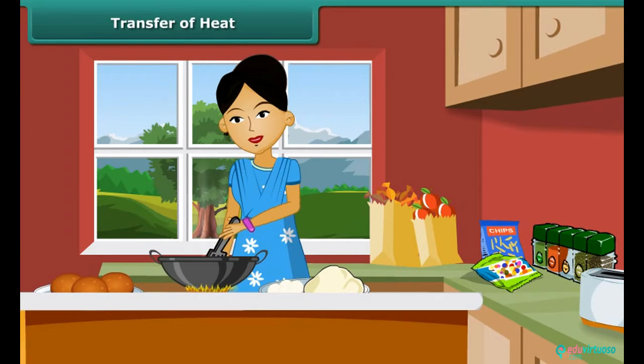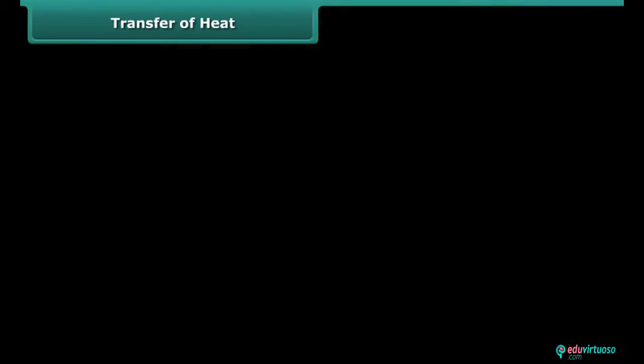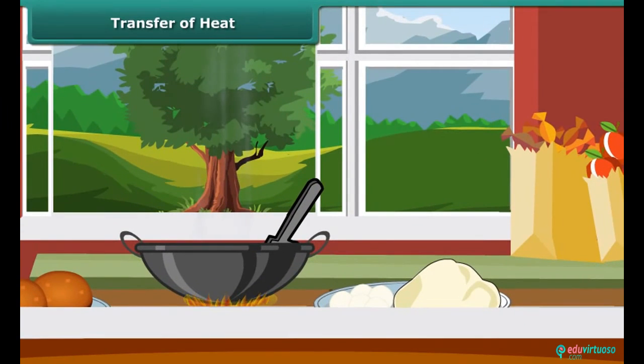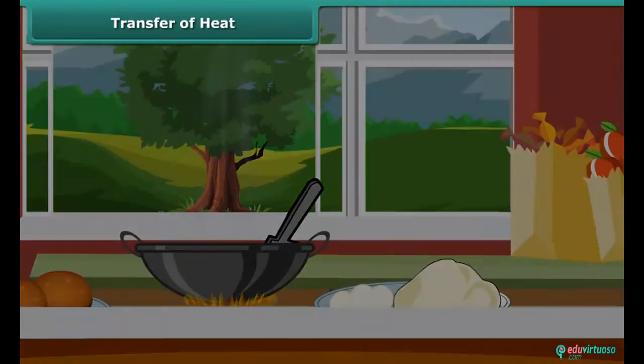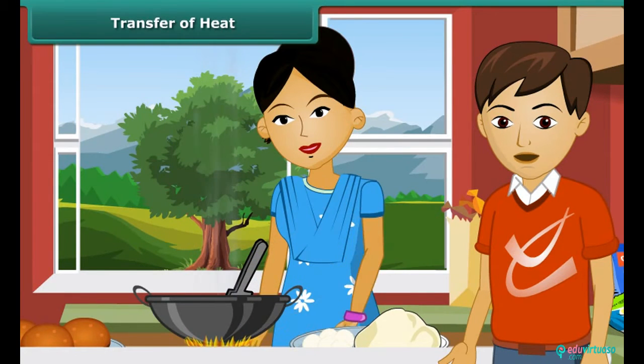Perhaps you have observed that when a stove is lighted in the kitchen, the air inside the room becomes a little warmer. If this air is allowed to come out through an open window, it gradually cools down. The metal stirrer left in the cooking bowl becomes hot.